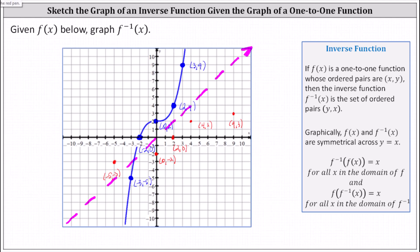And now let's do our best to graph f inverse of x. And again, recognizing the graphs of f(x) and f inverse of x are reflections across y equals x. The graph of f inverse of x is this red graph. And notice how it does appear as if the blue and red graphs are reflections across the line y equals x.